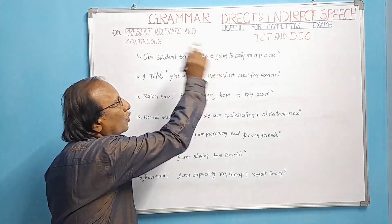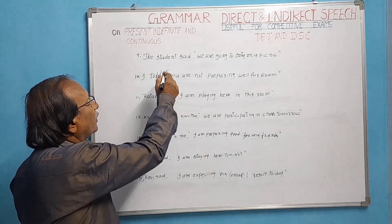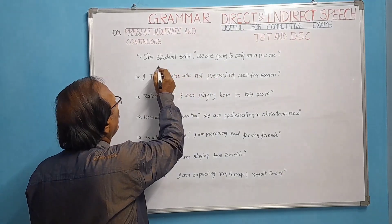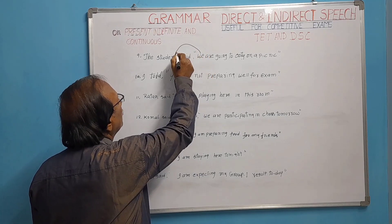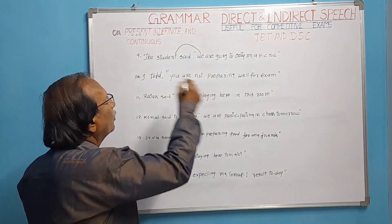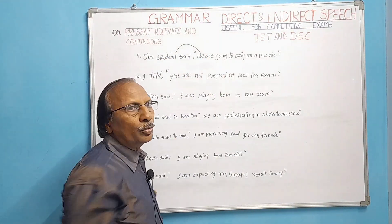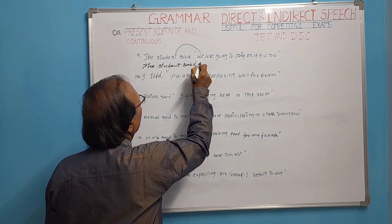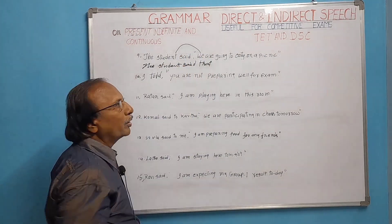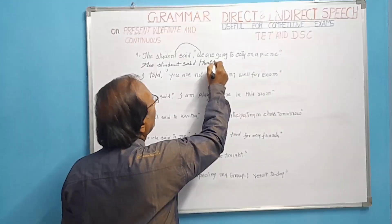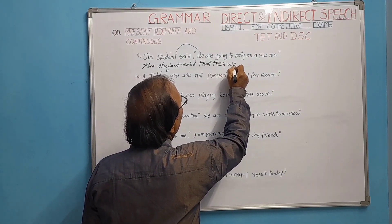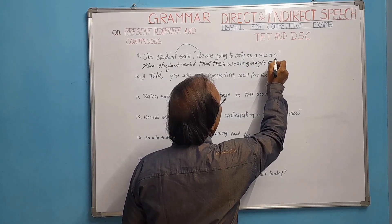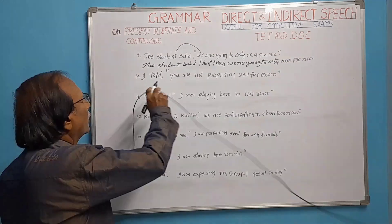The student said, 'We are going to Ooty on a picnic.' 'We' refers to the student and his team. Present continuous changes into past continuous. We add 'that' and change 'we' to third person plural 'they.' Result: The student said that they were going to Ooty on a picnic.